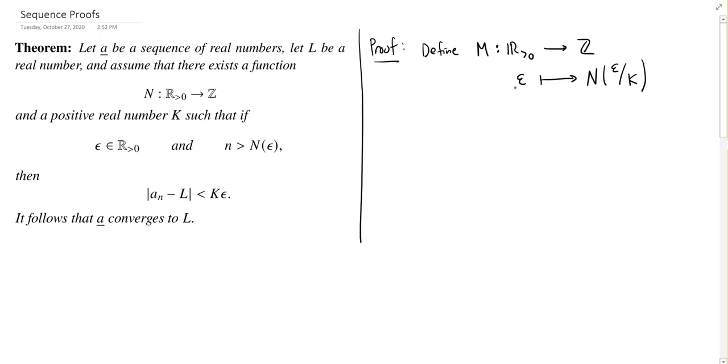I'm going to send it to N of epsilon over K. So K is this given positive real number from the hypotheses of the theorem. It's positive, so when I divide epsilon by it, I get another positive real number. And so there is some eventually number for epsilon over K. And I'm using the same N from the left.